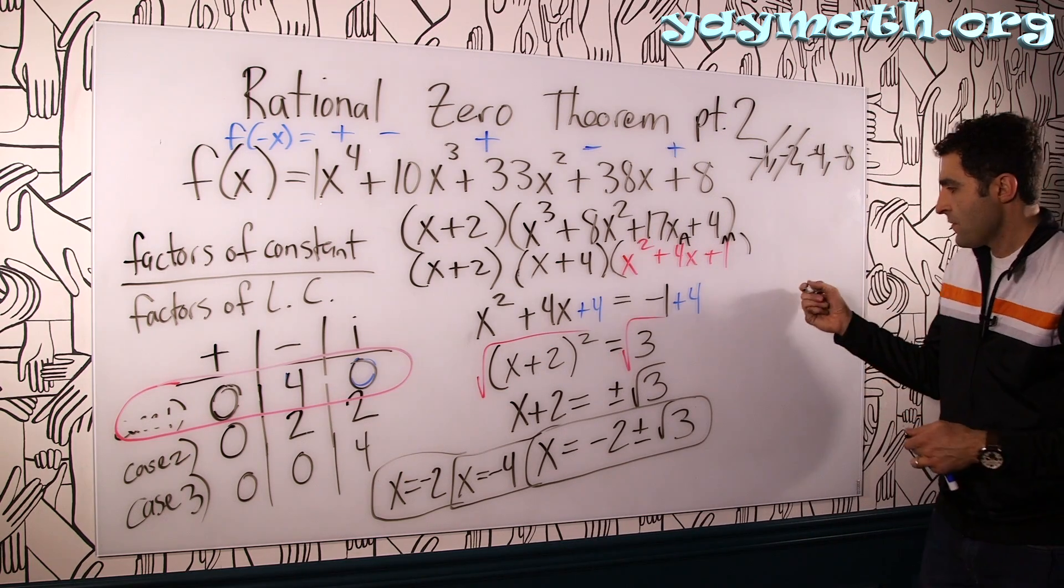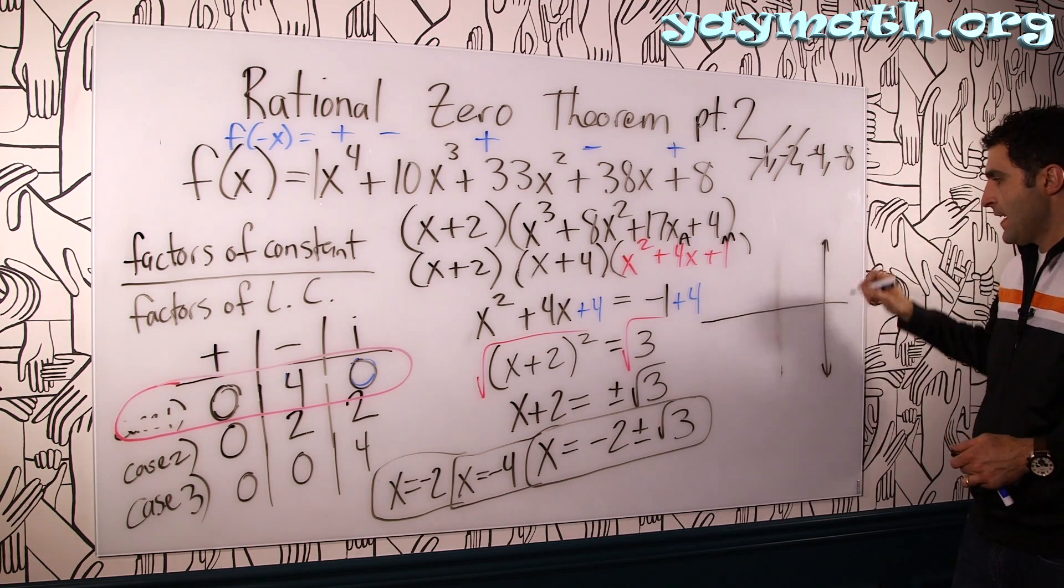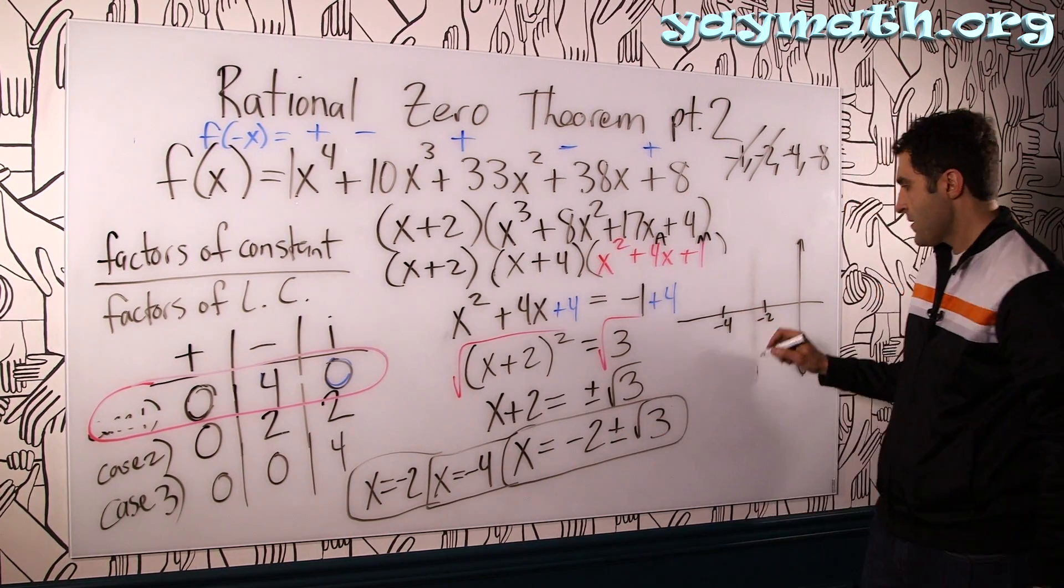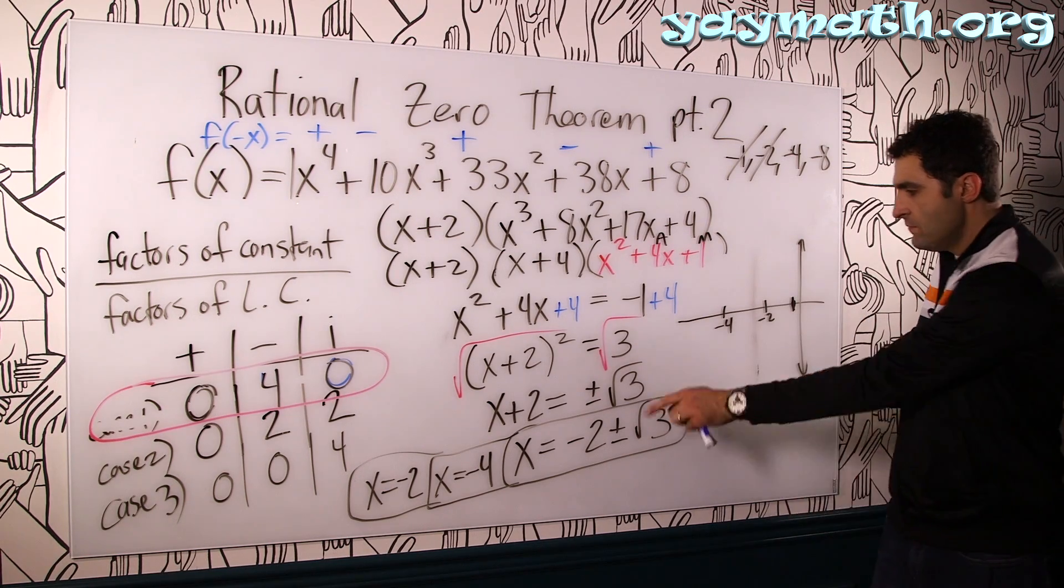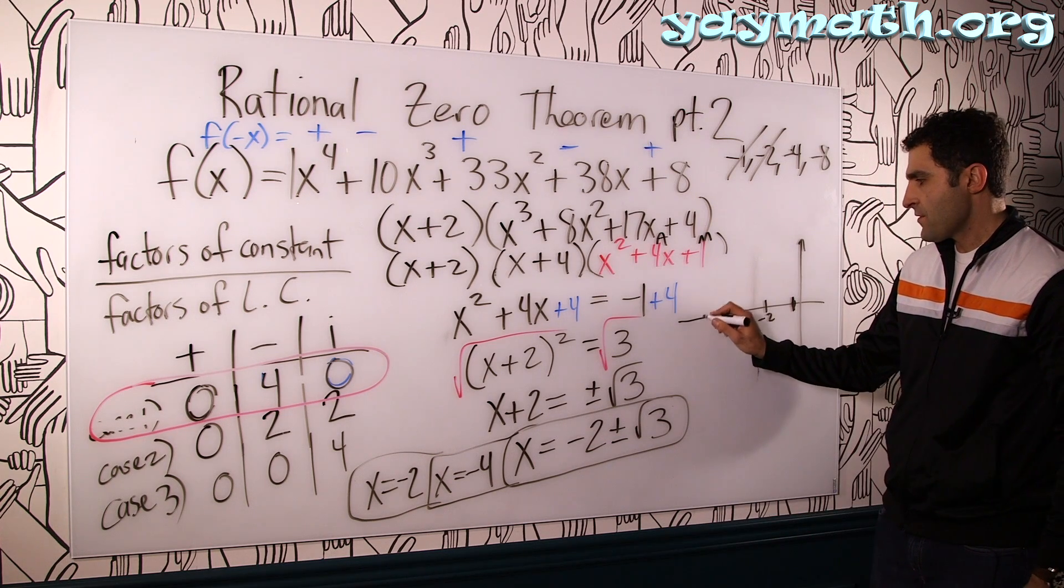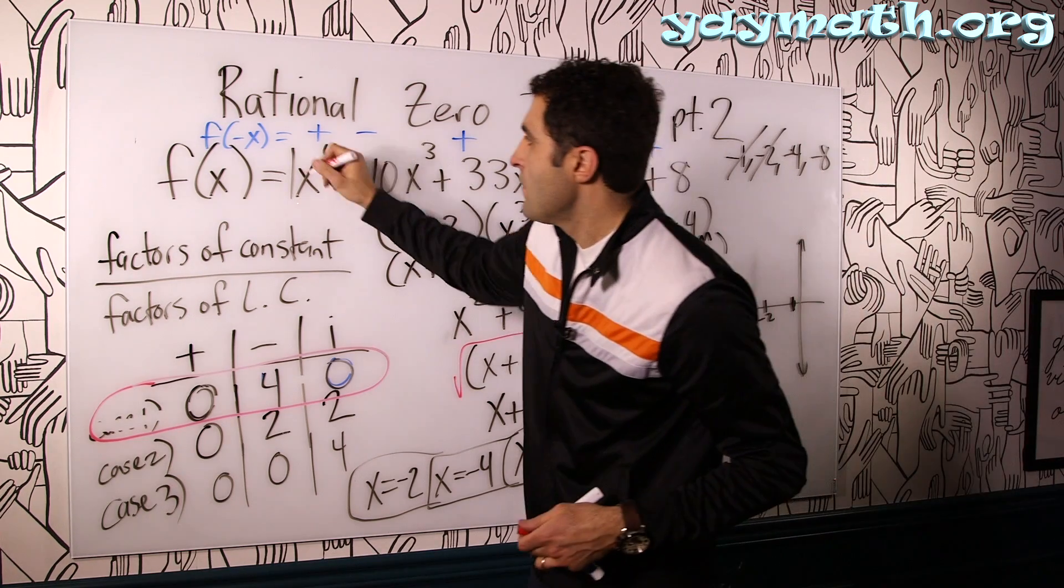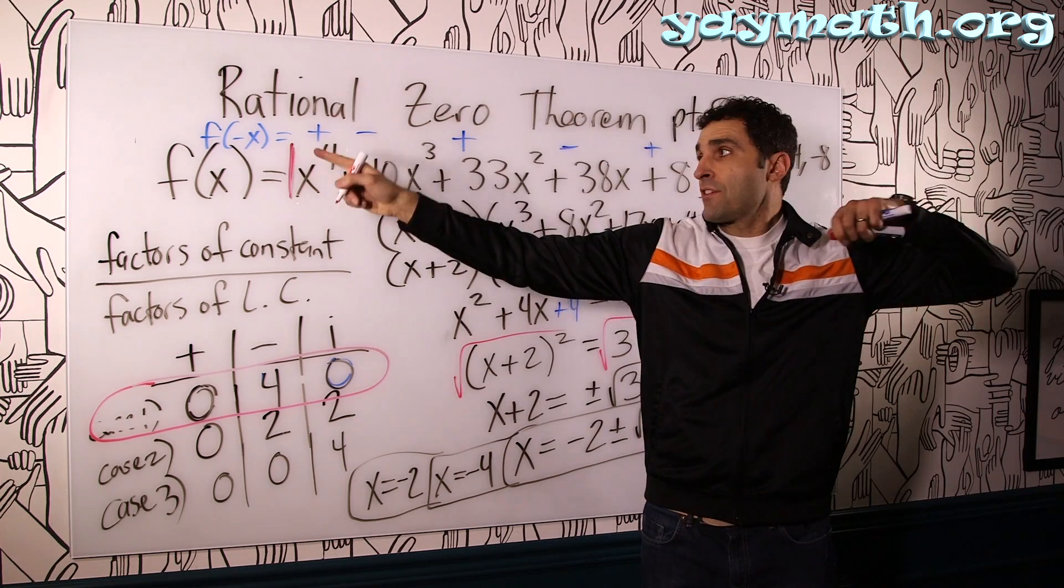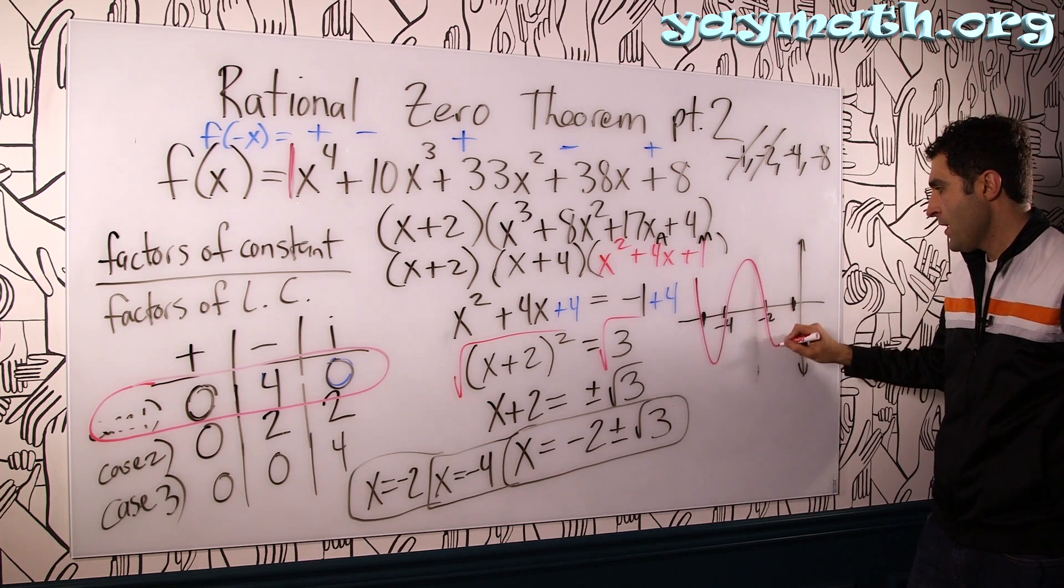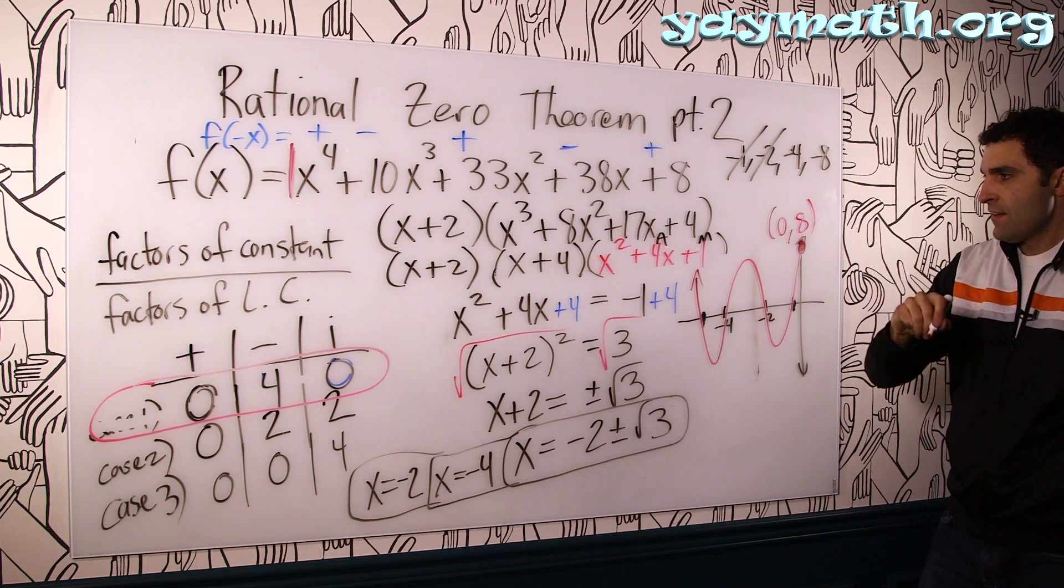Right? We can get a feel for it visually. Let's actually do it here. Something like that. It hits at negative 2. Hits at negative 4. It hits at negative 2 plus root 3. That's like right around here. A negative 2 minus root 3. This is like 1.7. So negative 2 minus 1.7 is negative 4.7 or so. Right there. This graph faces up. All right. Positive even degree. So it faces up. So you think of it like a W. 1, 2, 3, 4. Something like that. With a y-intercept of 8.